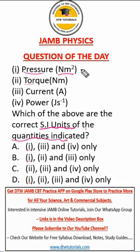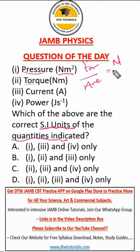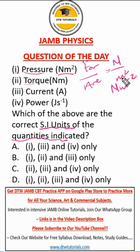Now look at pressure. Remember, what is pressure? Pressure is force over area, which is Newton over meter squared. So it should be Newton per meter squared — there should be a negative exponent. So this one is wrong.